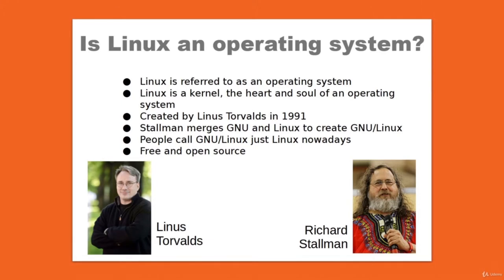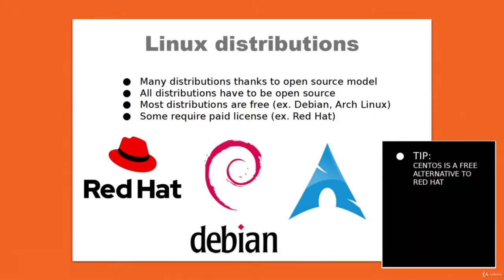Both Torvalds and Stallman were great proponents of a free and open-source model. This is the reason why there are so many Linux distributions out there. People could freely download the code and modify it to their desires to create their own projects. Most of these Linux distributions share the same free and open-source model, like Debian and Arch Linux, though some are not free of charge. Distributions like Red Hat require paid licenses to get updates and support.